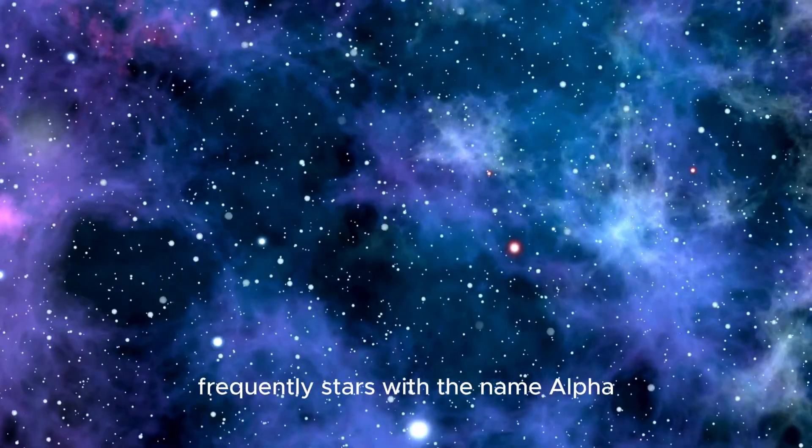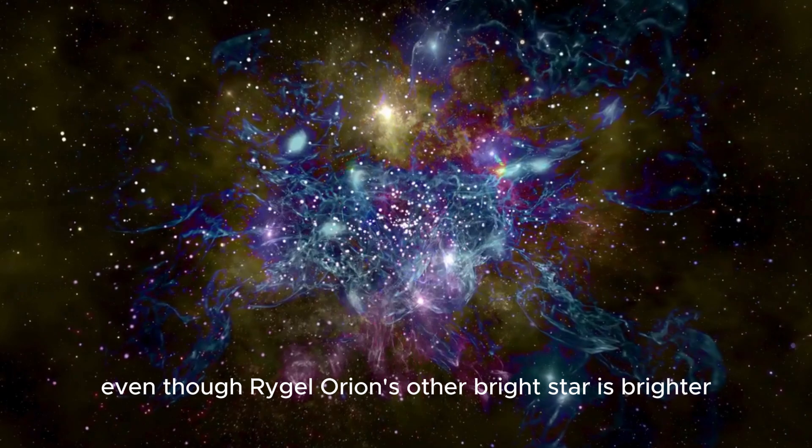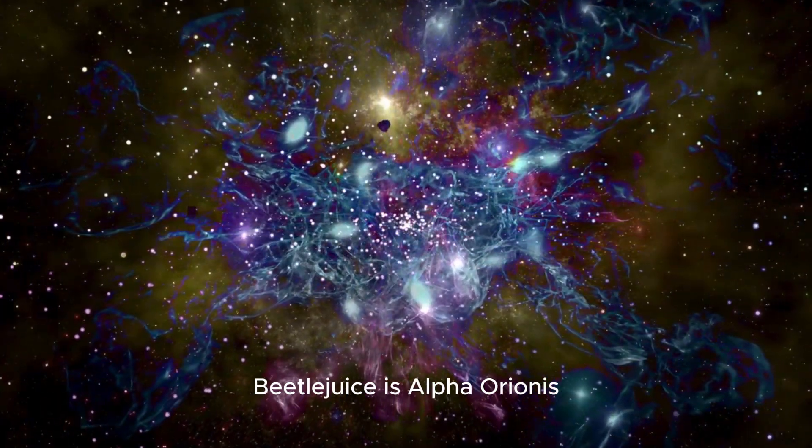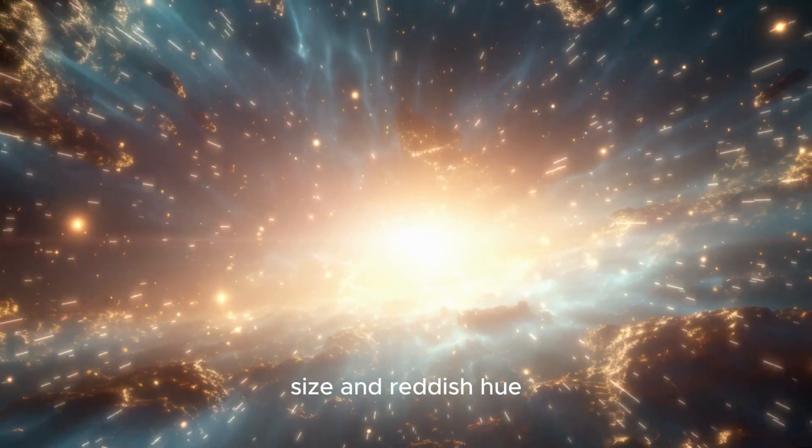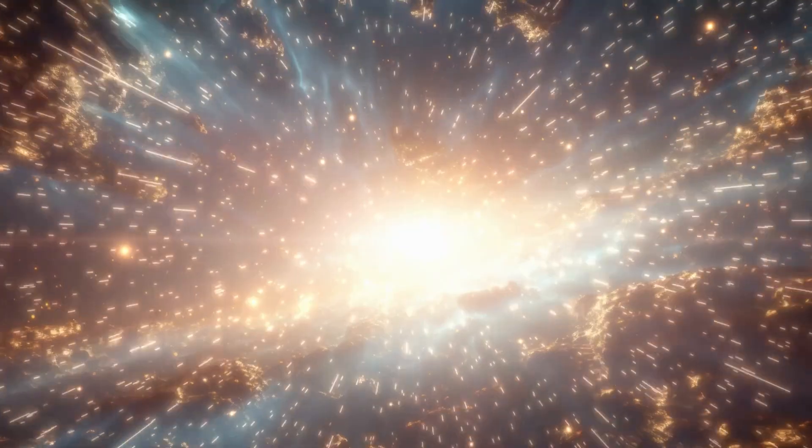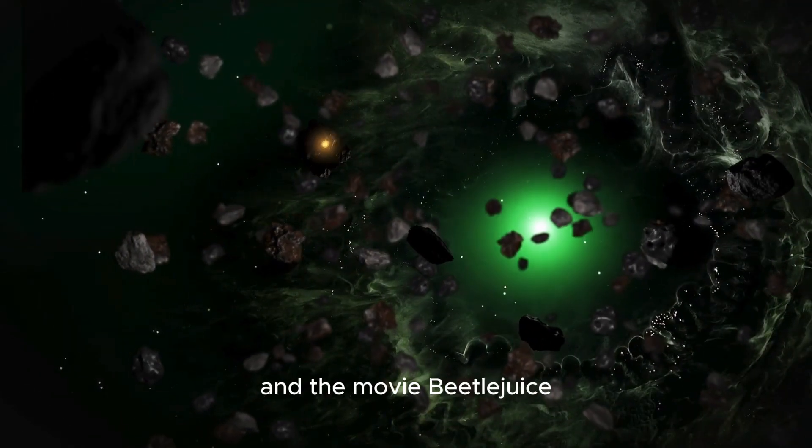Because of its dismal orange-red color, Betelgeuse is easily identified. It's also known as Alpha Orionis and is the second-brightest star in the constellation after the blue supergiant Rigel. Betelgeuse is an intriguing object for star studies due to its variable nature. It's noteworthy that this star served as the model for the movie Beetlejuice.